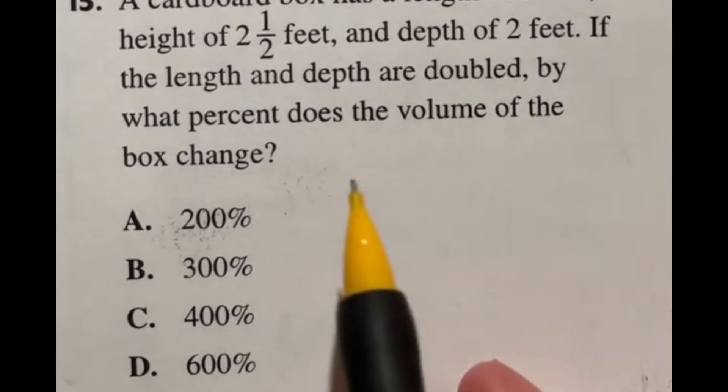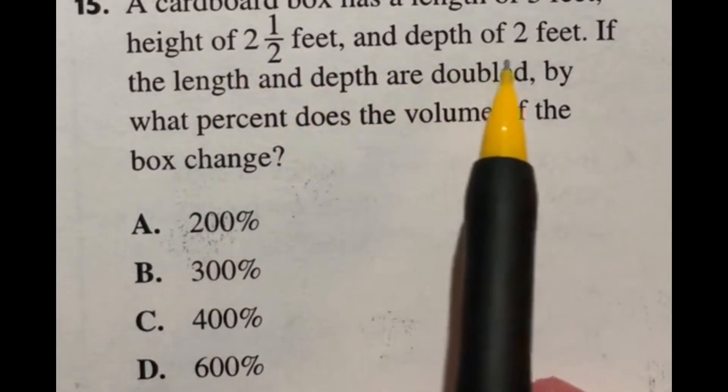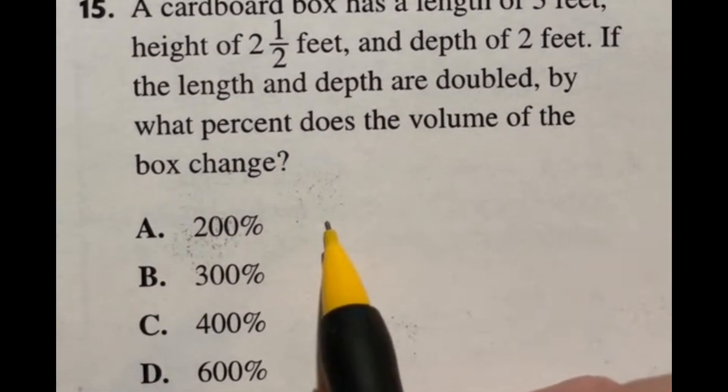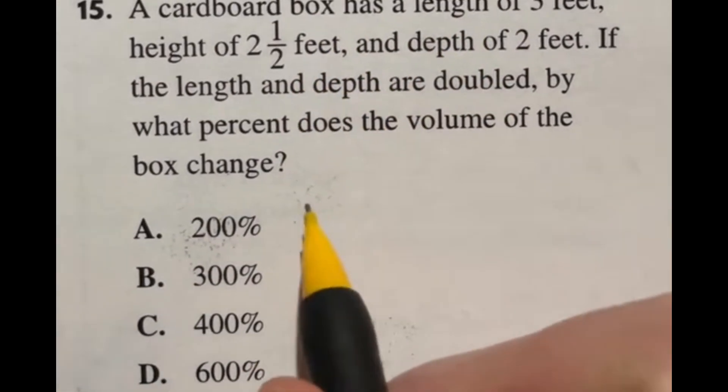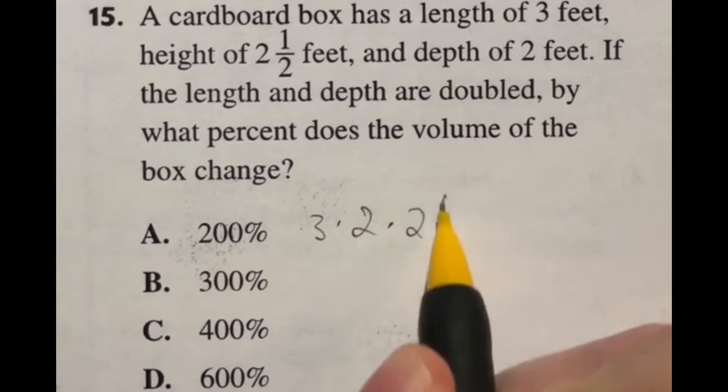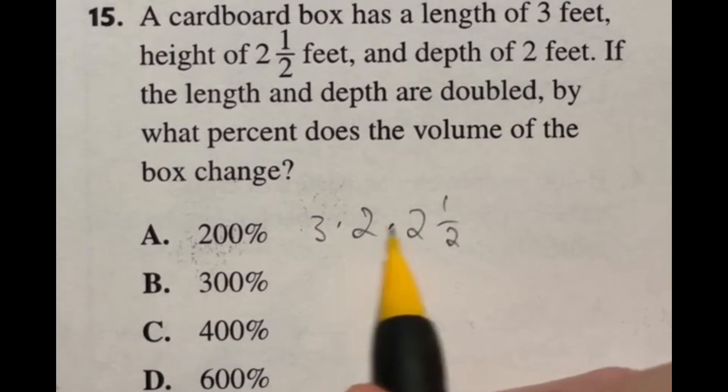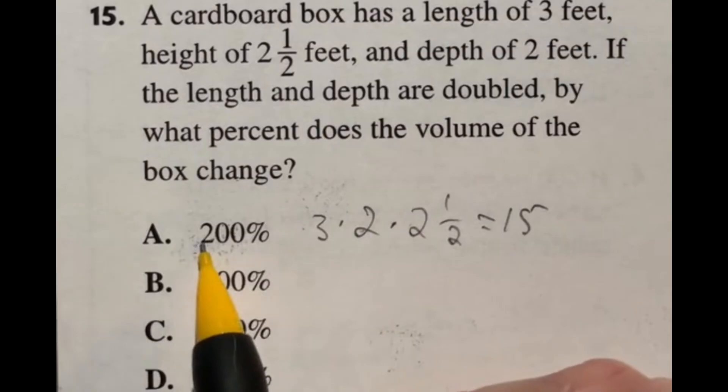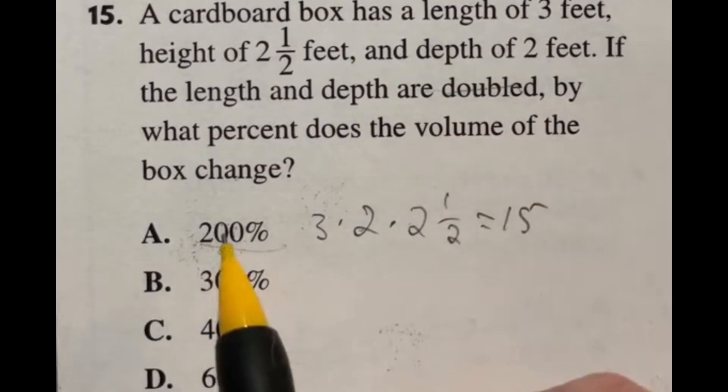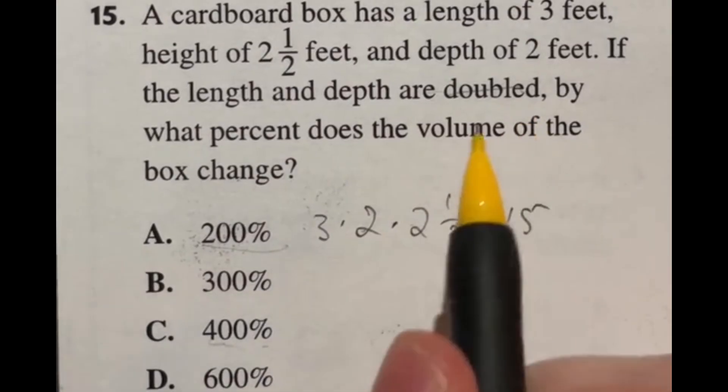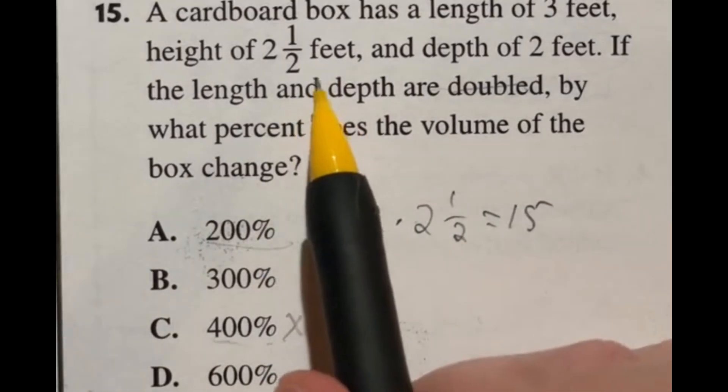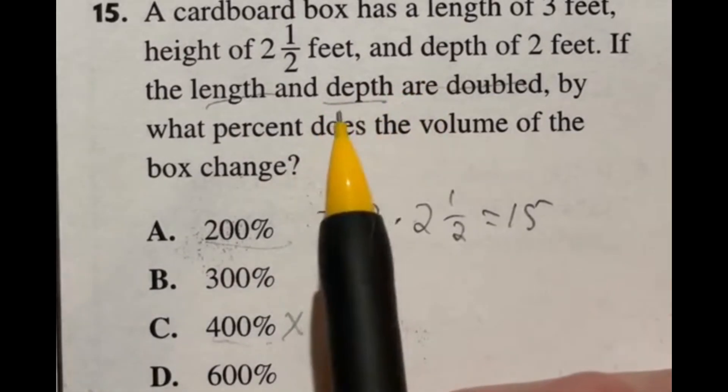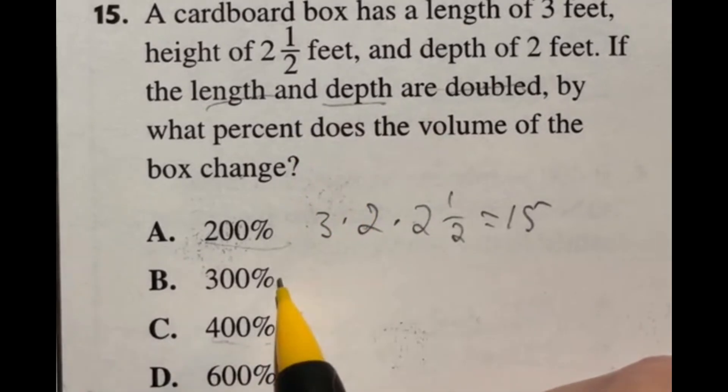Number 15 is just getting everyone. It says a cardboard box has a length of three feet, height of two and a half feet, and a depth of two feet. If the length and depth are doubled, by what percent does the volume of the box change? So here's the deal, you got this box. We know that volume of this box is just going to be multiplying those together. So three times two times two and a half. Now if I do that out, the three times two is going to be six times two is 12 and another half would be adding a three back to that. So this is going to be 15. A lot of people would look at this and say, okay, I double the length, that means we're increasing to 200% the original. And then we double the depth. So that's another 200%. So we're at 400%. But in reality, it's not 400%.